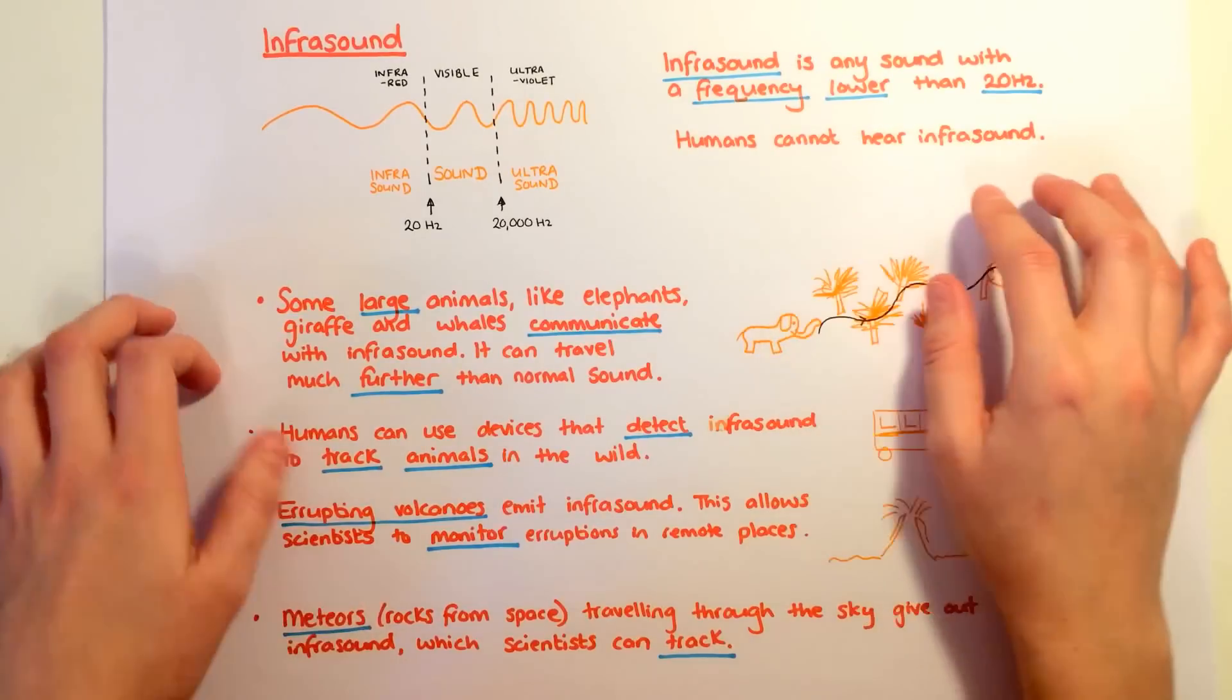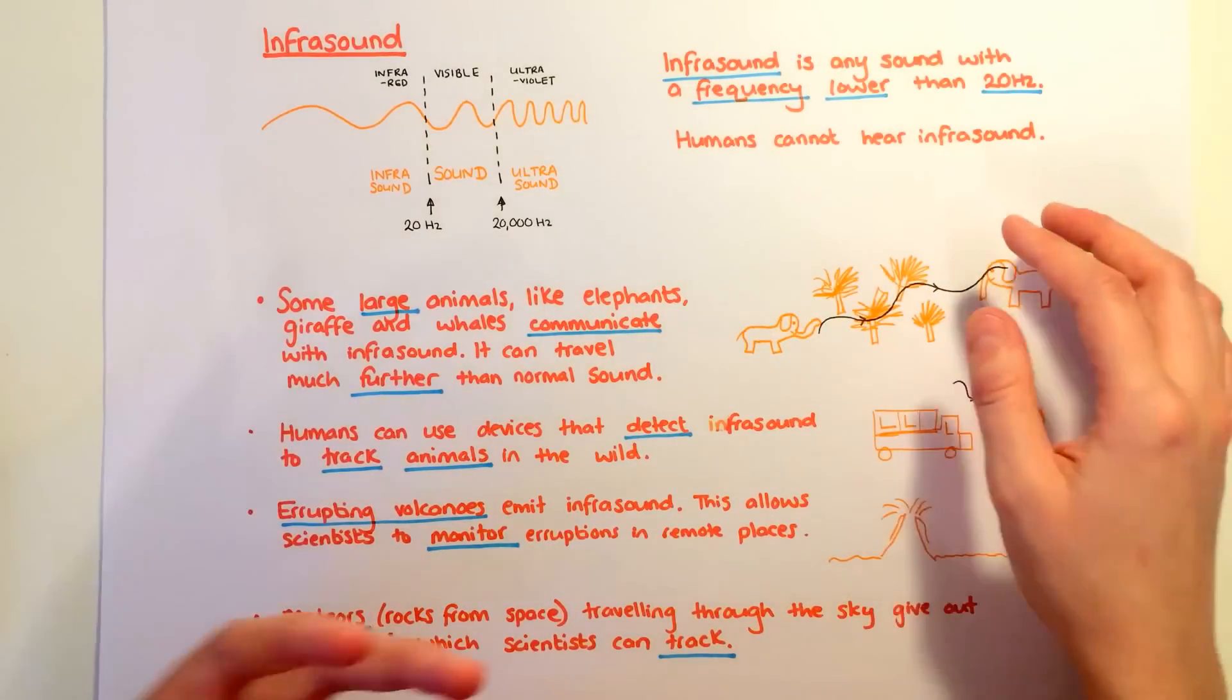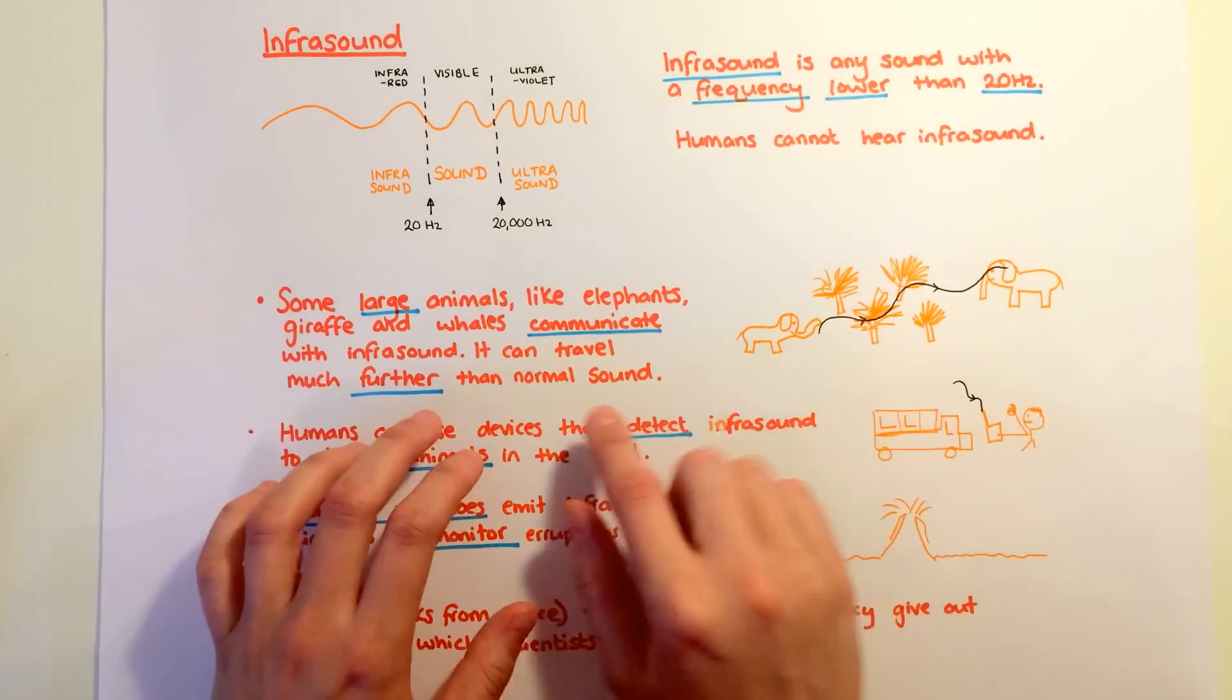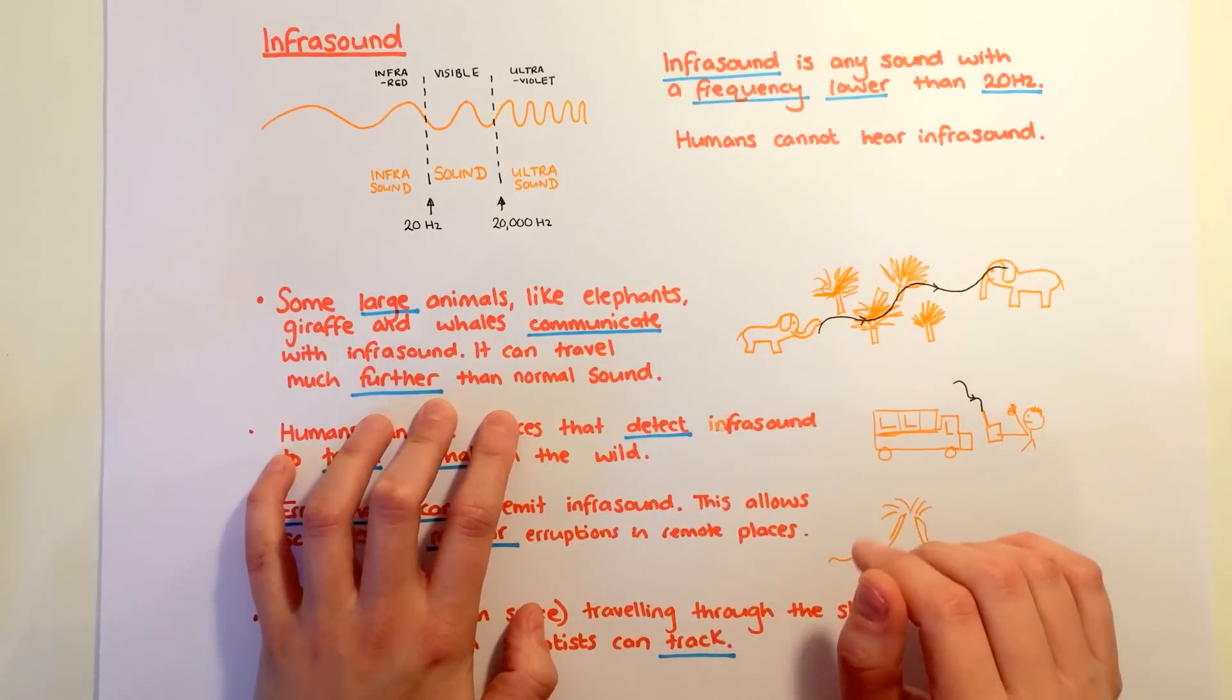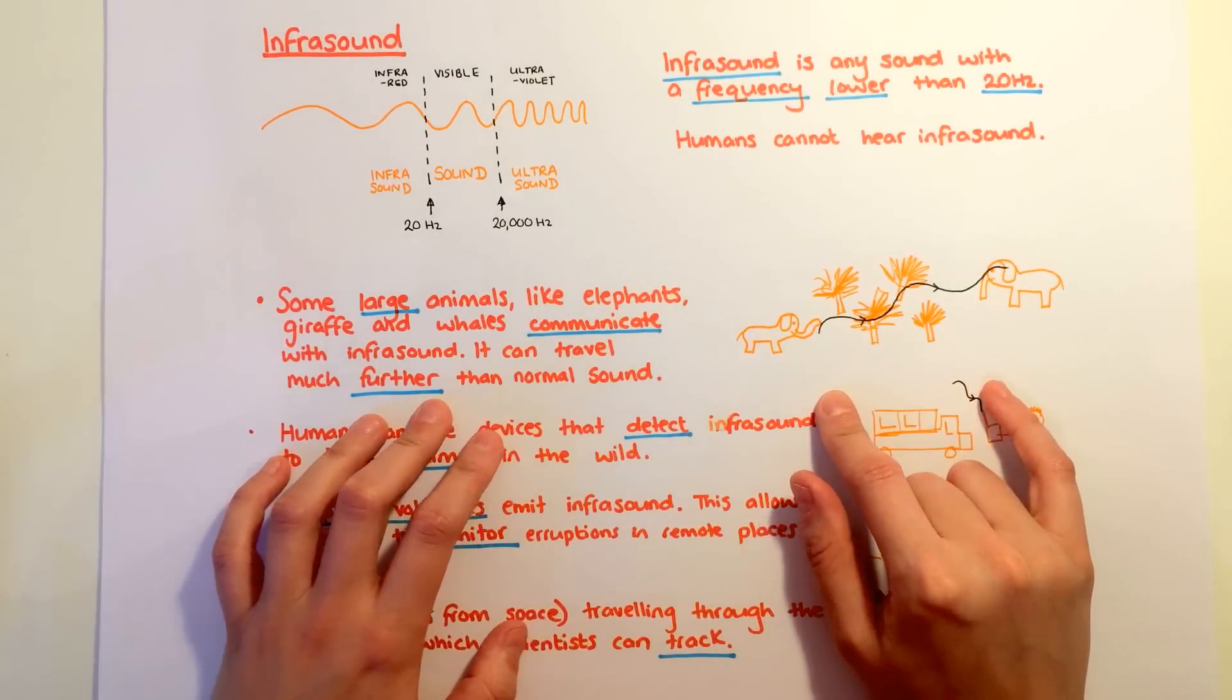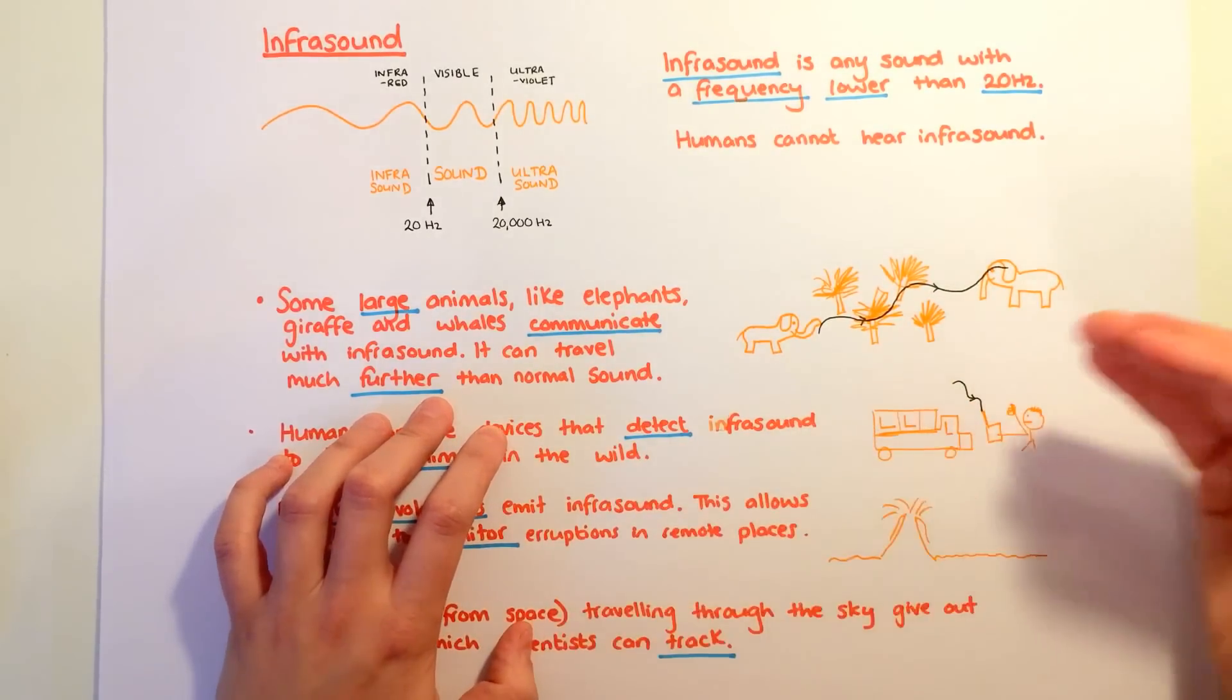Infrasound is any sound with a frequency lower than 20 hertz. We can't hear it, but it can be used for lots of things. Some larger animals like elephants communicate with infrasound. It can travel much further than normal sound.